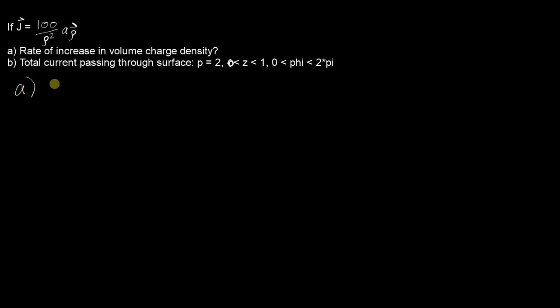Let's do that first. The point form of the continuity equation says that the divergence of current density equals the negative of this quantity that we want. So let's start by taking the divergence of J.